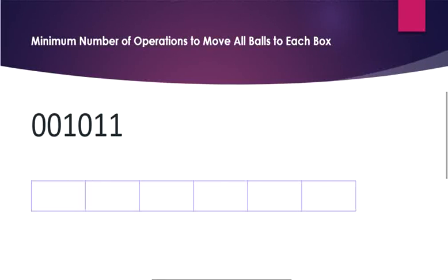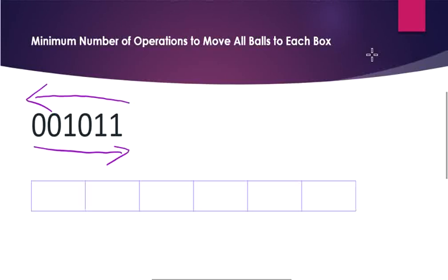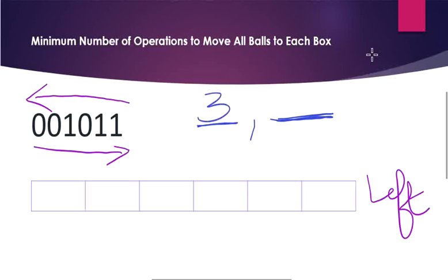We are going to use dynamic programming to solve this in linear time. First, we move all the balls from left towards right and calculate the number of steps. Then we do the same operation from right towards left and calculate more steps. Summing both gives us our answer array. Before understanding the pattern, I want you to understand the key concept: if there is one empty box and one box with 3 balls, you have to move one ball at a time.